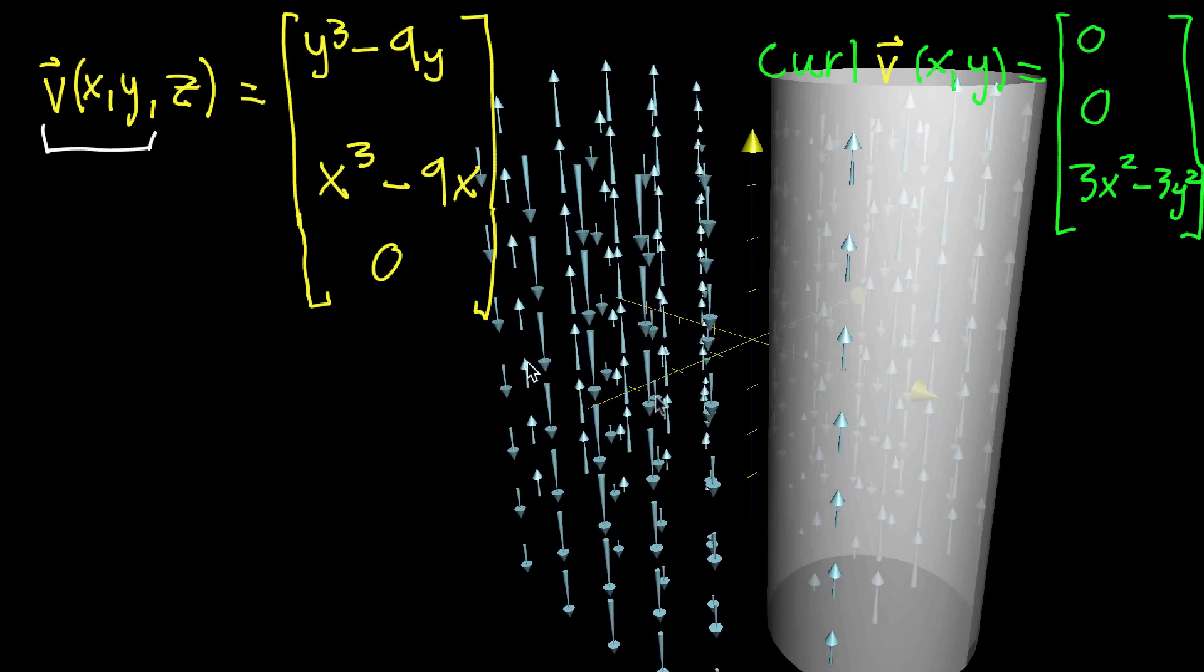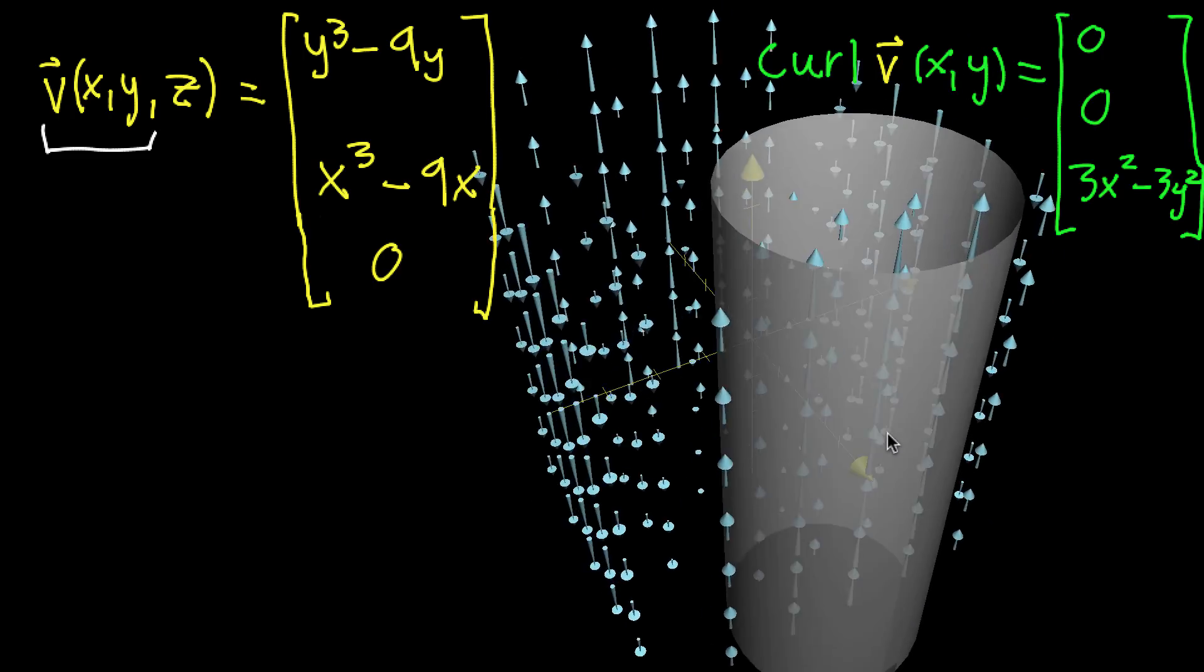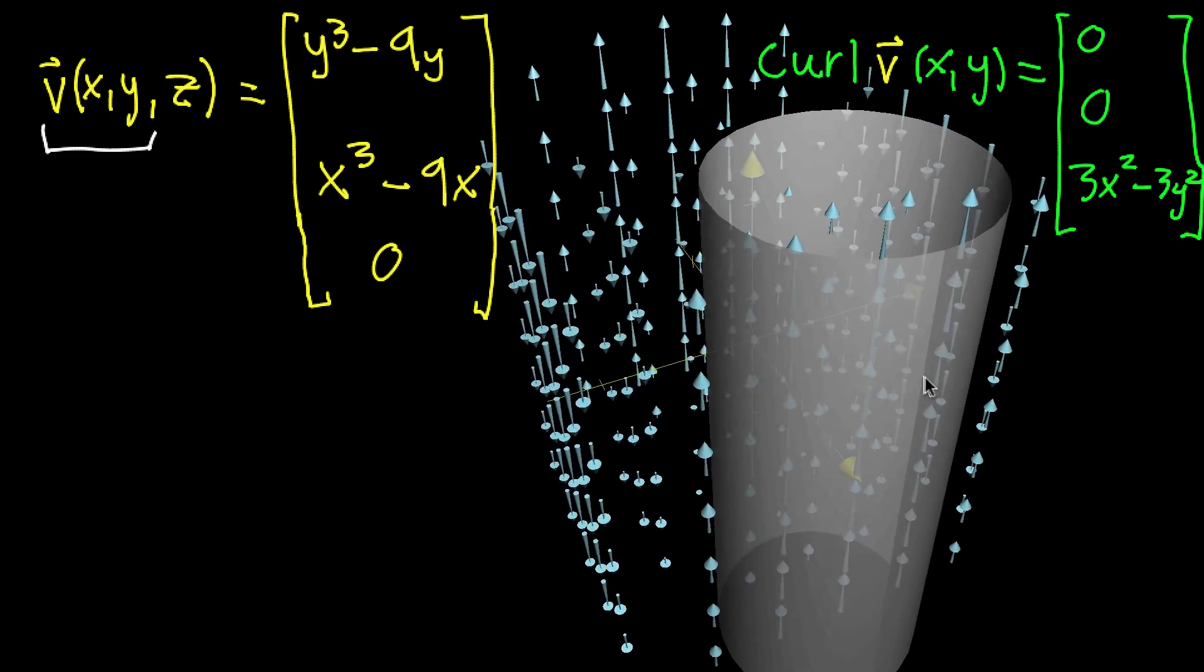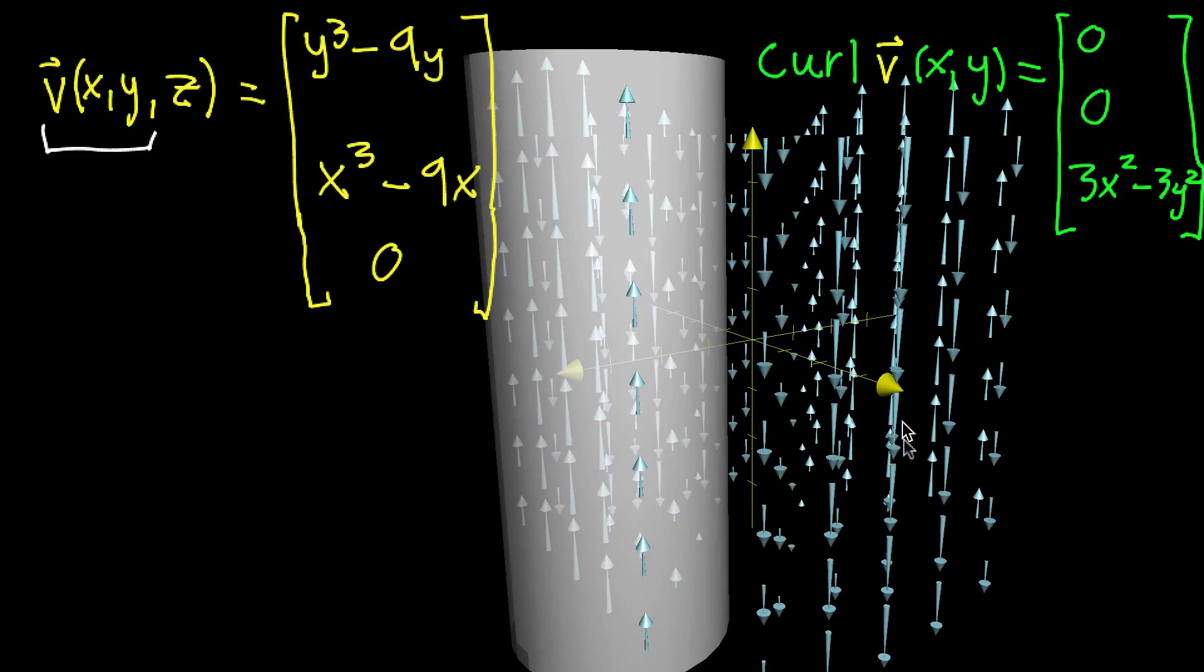Inside that column, where we had that tornado of rotation I was describing, all of the vectors point in the positive z direction. But if we were to view it elsewhere, like over in this region, those are pointing in the negative z direction.